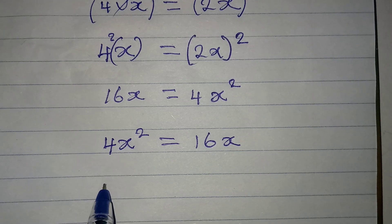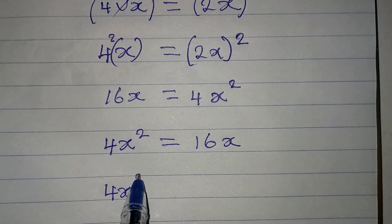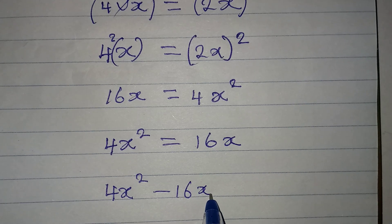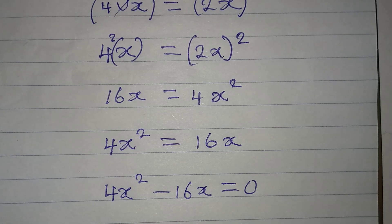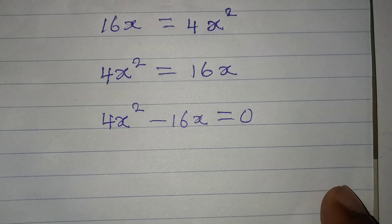Bring everything to the left. So, we have 4x squared minus 16x to be equal to 0. Now, in this case, what is common to both of them is...